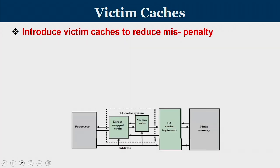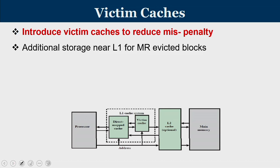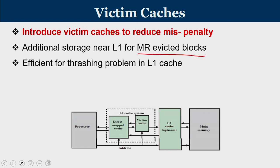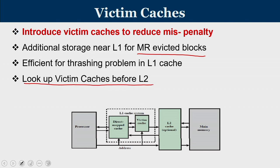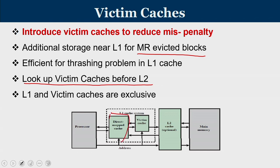Now we move to victim caches, which are used to reduce miss penalty. A victim cache is additional storage near L1 for the most recently evicted blocks. It is very efficient for the thrashing problem in L1 cache — it acts as a lookup before the L2 cache, and L1 and the victim cache are exclusive. From the diagram, this is your L1 cache, and the evicted blocks from L1 are kept in the victim cache.